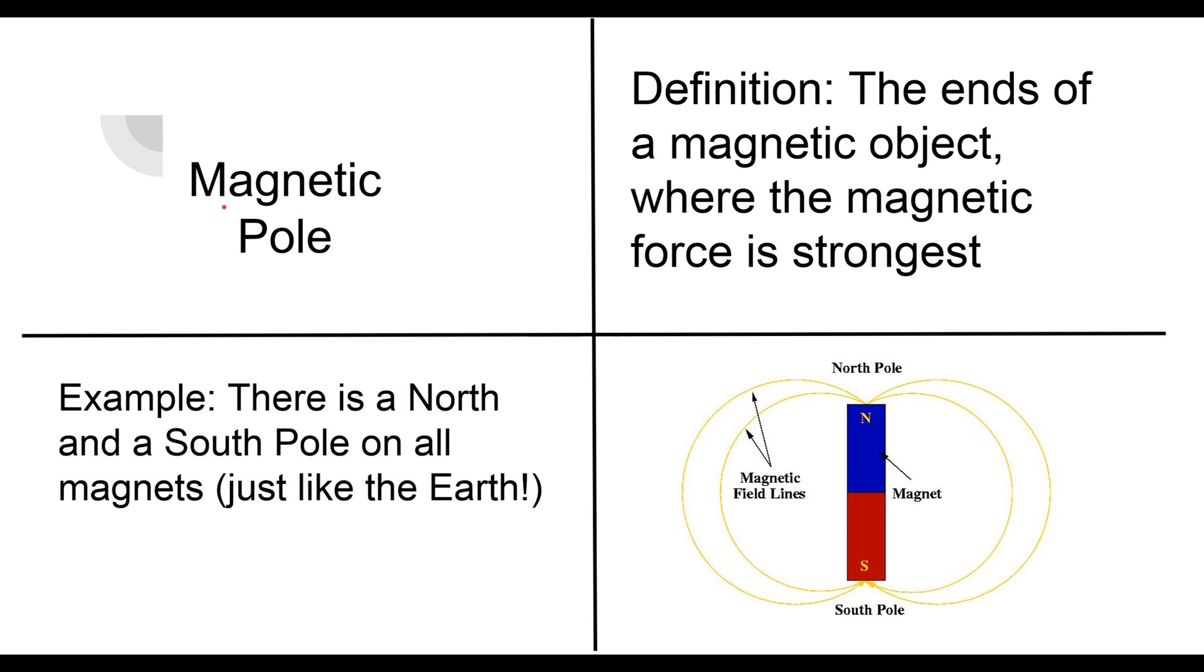Our next word is going to be magnetic pole. So our definition is, it's the ends of a magnetic object where the magnetic force is strongest. Our example being, there is a north and a south pole on all magnets. Also, this is just like the earth, right? We have a north pole and we have a south pole.